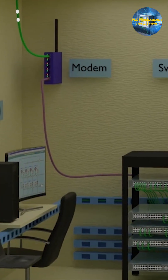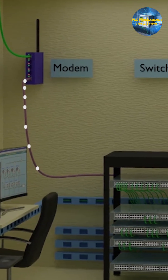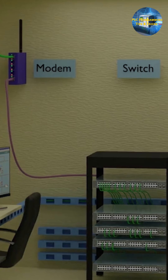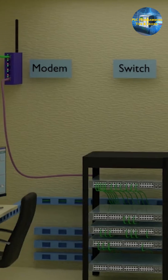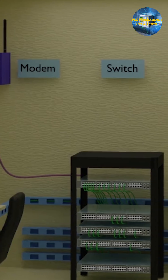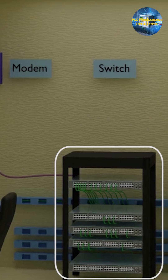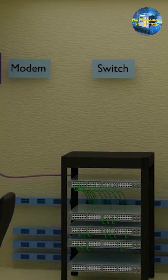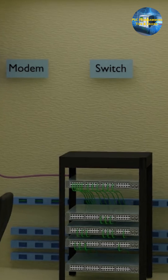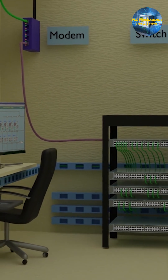Inside the SCADA control room, the data is converted to Ethernet using a modem. A modem is a device which converts the radio wave signal to Ethernet so that the data is available for all devices inside the SCADA room. The modem connects to an Ethernet switch, which is a central hub where all devices share data with each other.